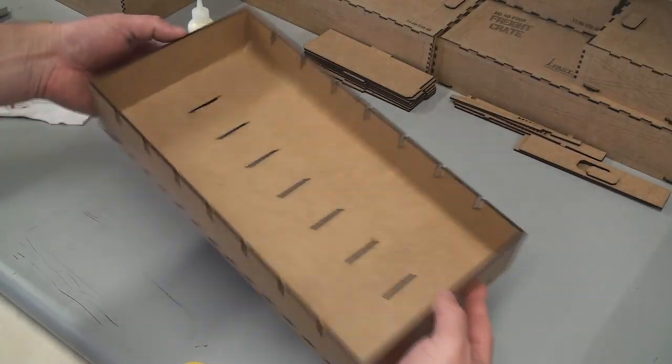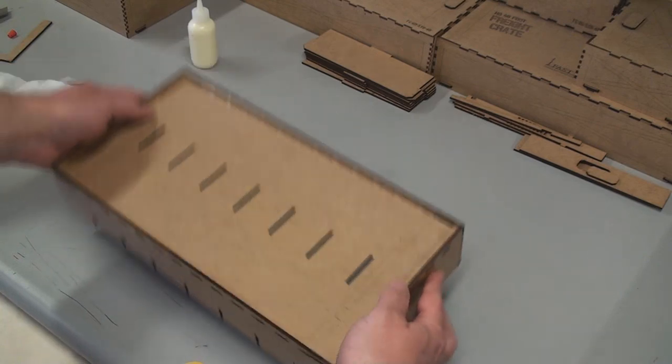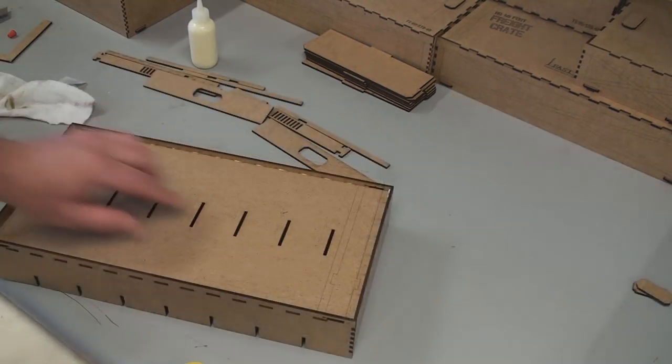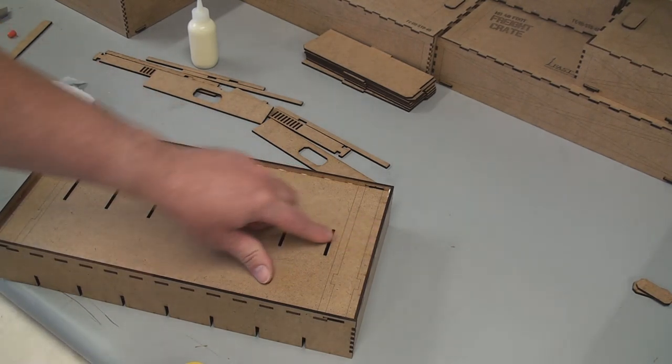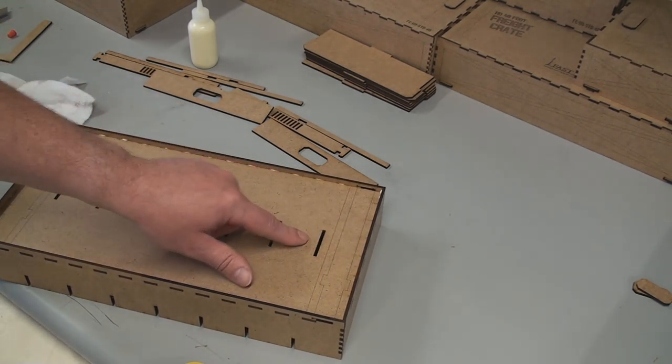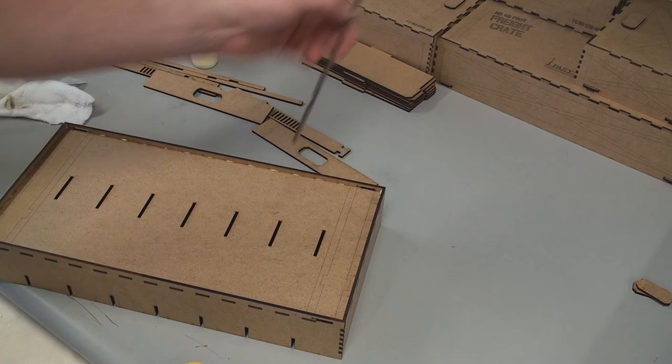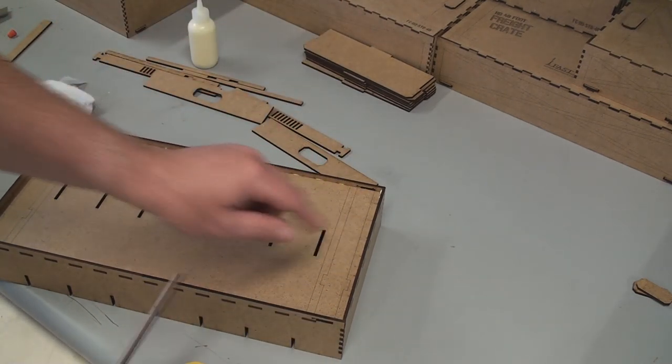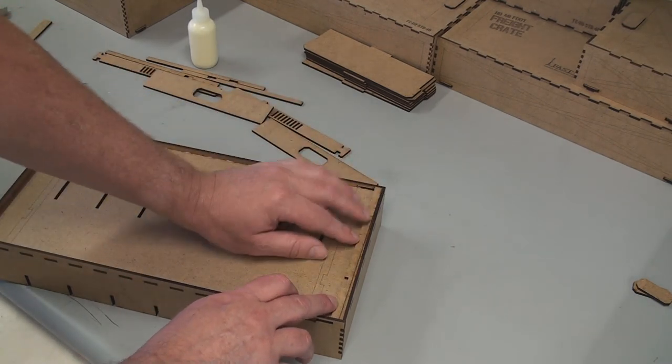Now we have our bottom glued together, and we're going to flip it over and work on our two key locks. So we're going to work from the outside in towards the center, adding our parts. The first part is this long keeper. You can see there's an etching on the bottom of the box. It shows where all this has to be assembled.